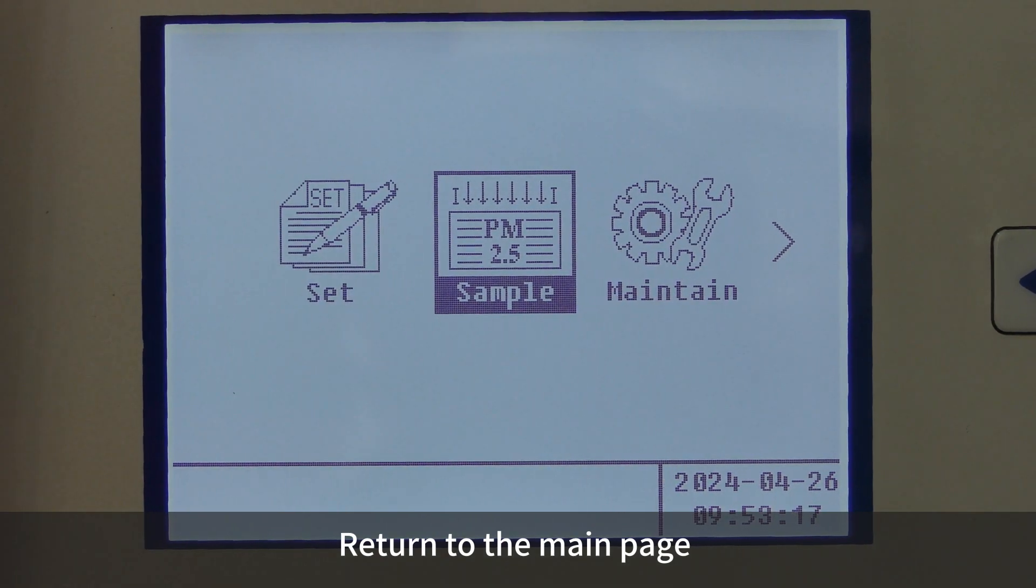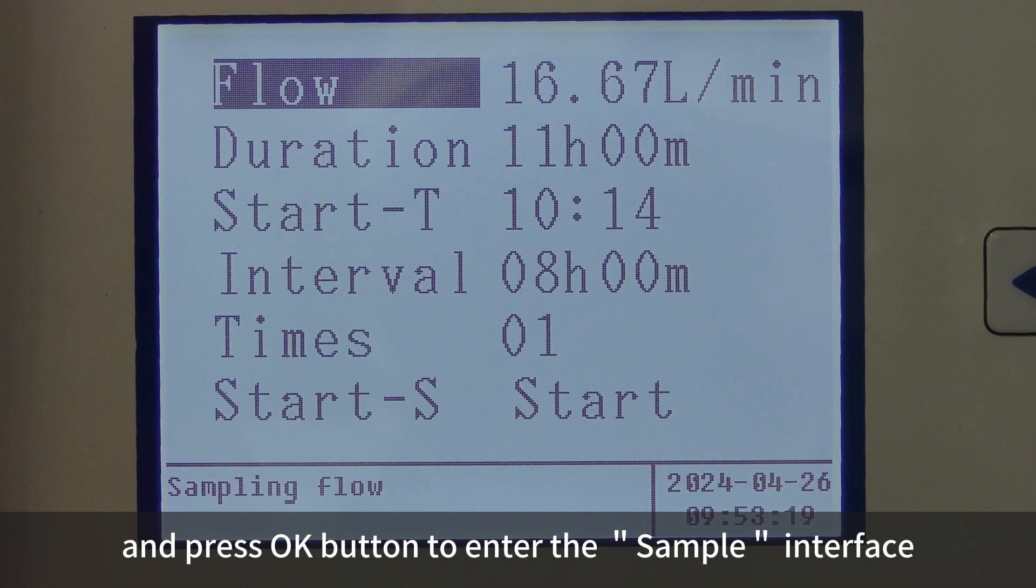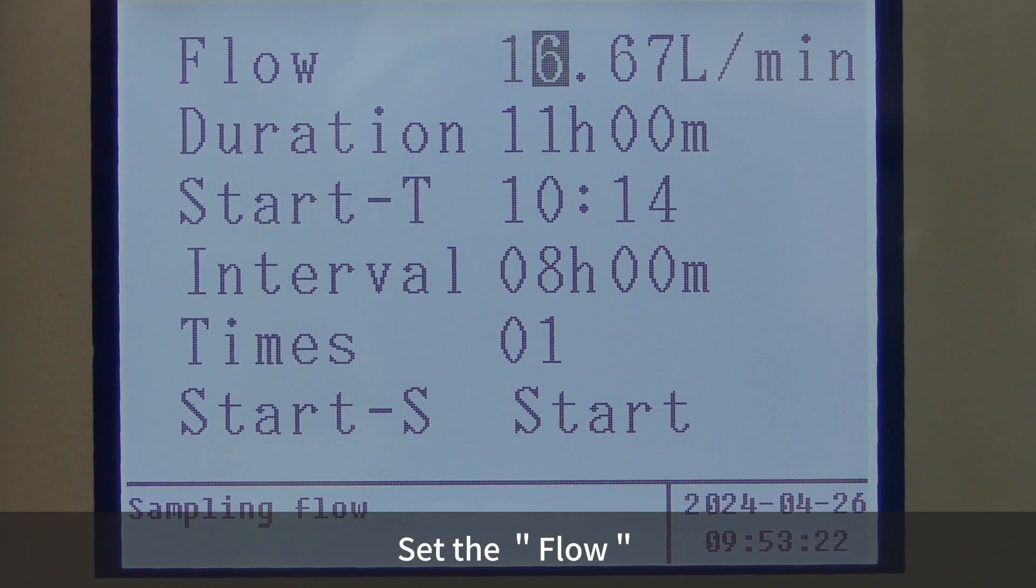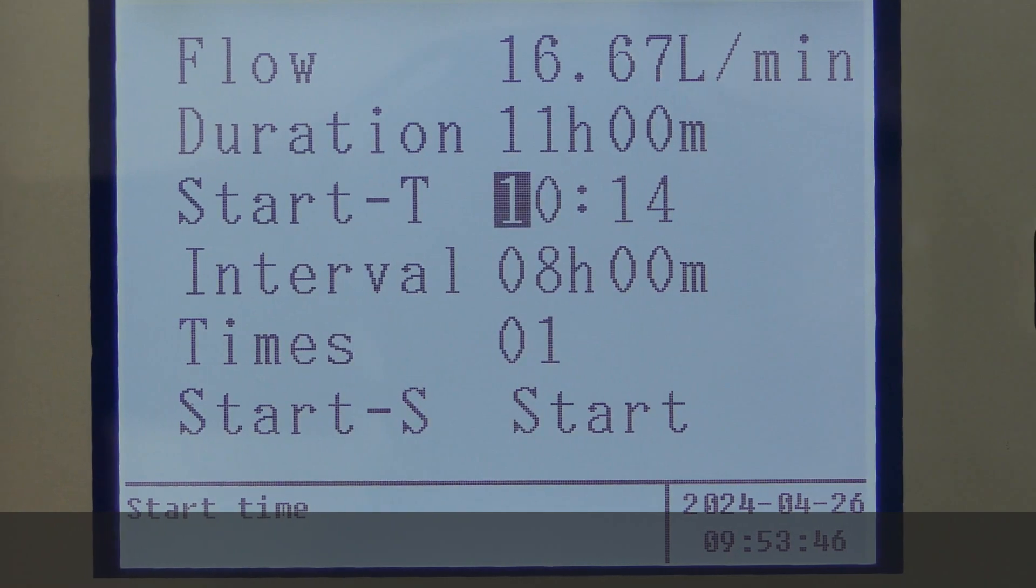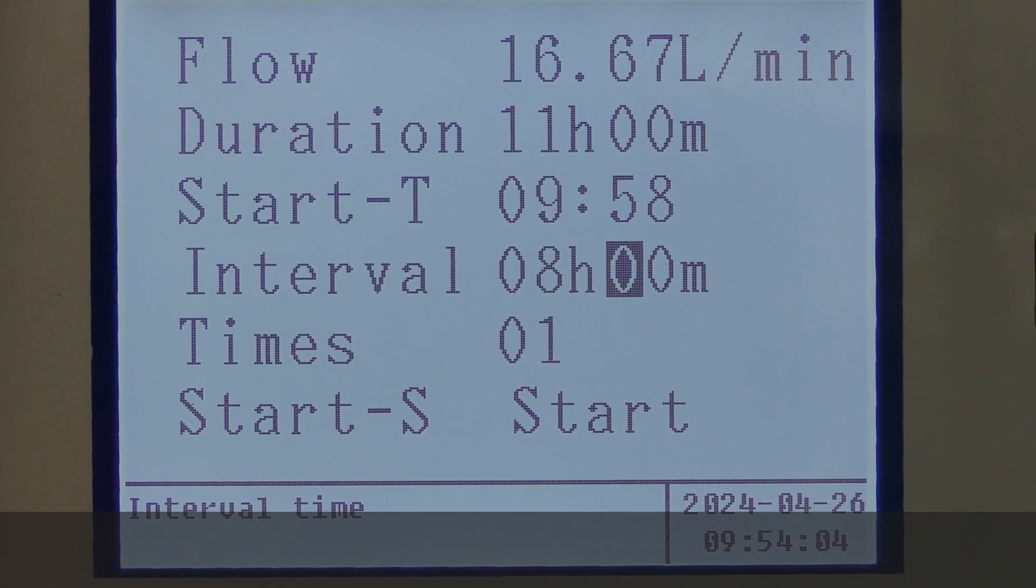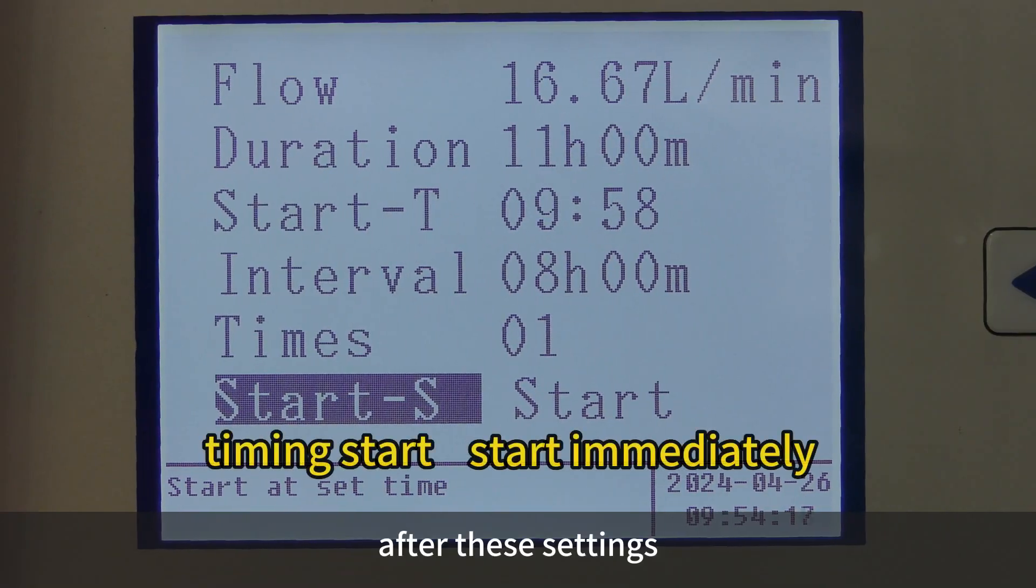Return to the main page and press OK button to enter the sample interface. Set the flow, duration, start time, interval, and times. After these settings, you can select Start S or Start mode.